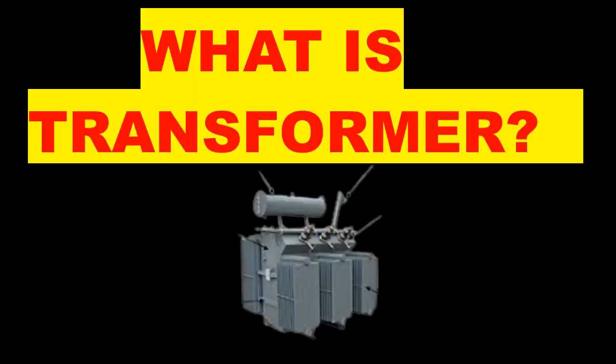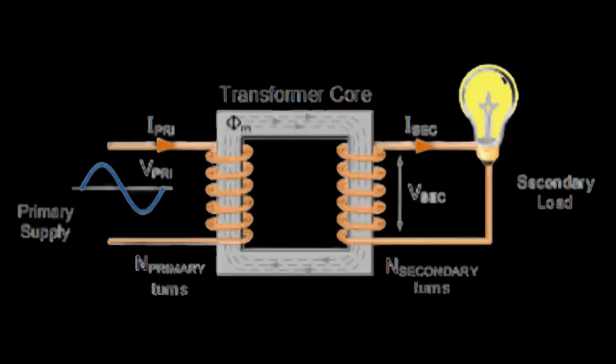An electrical transformer is a static electrical machine that converts electrical power from one circuit to another while maintaining the same frequency. Transformers can increase or decrease voltage while decreasing or increasing current.